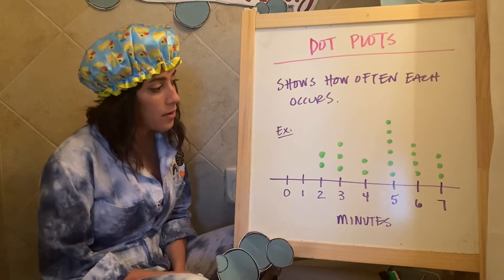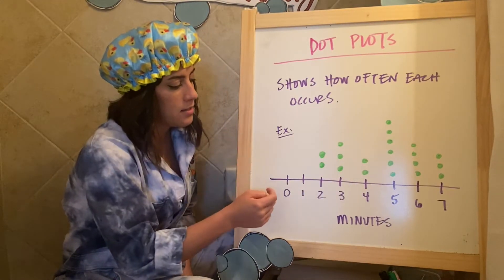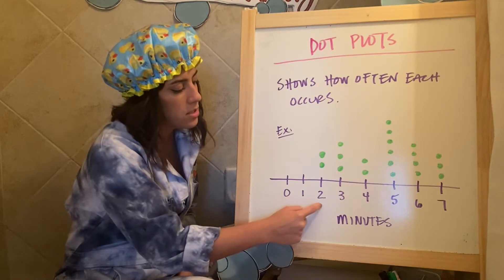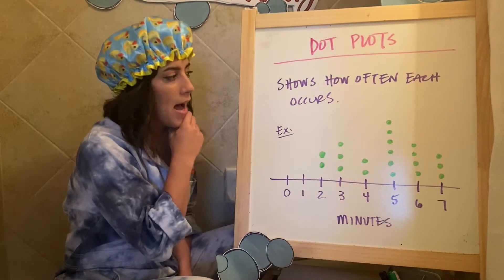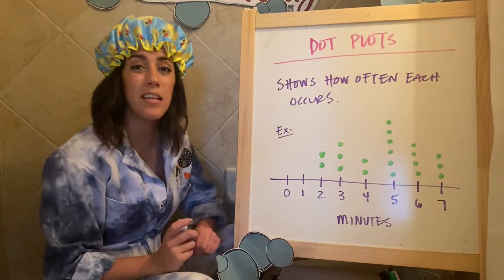Here's an example. I wrote down basically a number line and titled it minutes. So these are the amount of minutes, zero minutes, one minute, two minute, three minute, four minutes, and so on. I surveyed a class to see how long they take to eat breakfast.